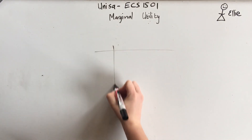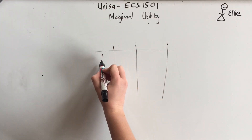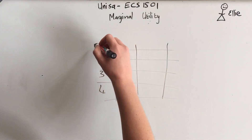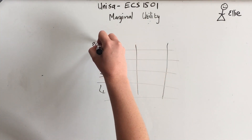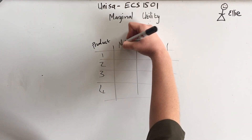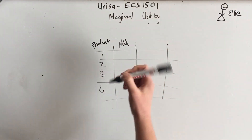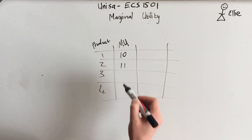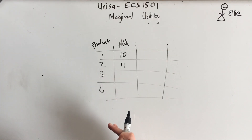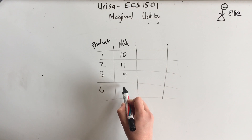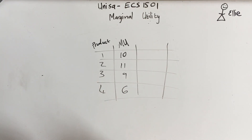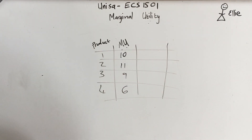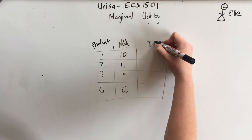If you have a table with columns — one, two, three, four units or products — and the other column is marginal utility: the first glass of water you're willing to give away ten utilities, for the next one maybe even eleven because you were that thirsty, then it starts dropping — nine, then maybe six — until it goes into negative marginal utility. It's the points you're willing to pay.